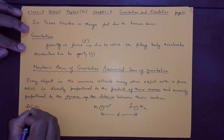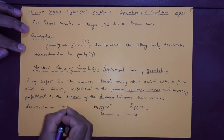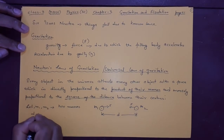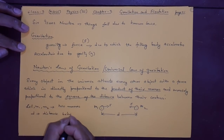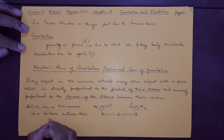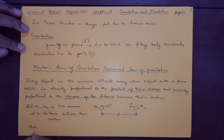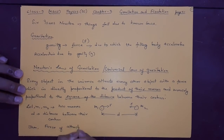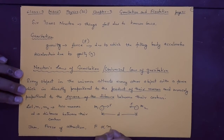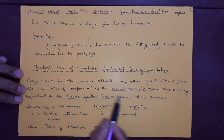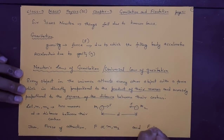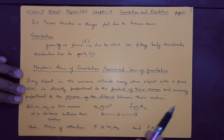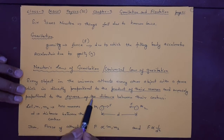Let m₁ and m₂ be two masses, and d be the distance between their centers. The force of attraction between them: F is directly proportional to m₁m₂, and F is inversely proportional to d² — the square of the distance between their centers.